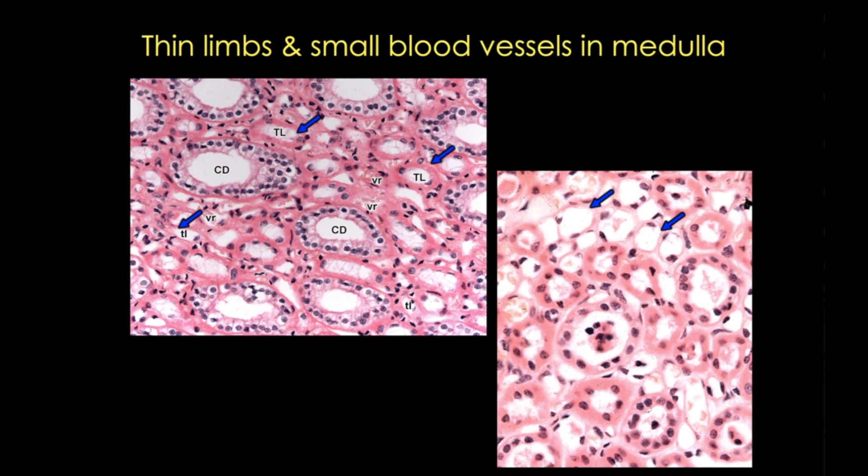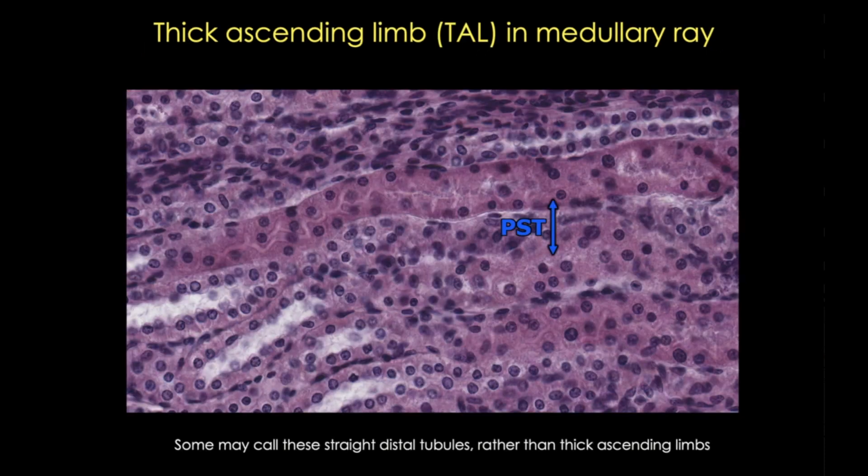It's impossible to tell in a histological section whether you're looking at a thin descending limb or a thin ascending limb, and it's also difficult to tell the thin limbs from capillaries. In this image, the thin limbs are marked by the blue arrows and the blood vessels are marked with the red arrows — they're pretty hard to tell apart, except that the vessels contain red blood cells.